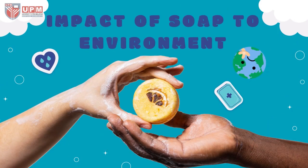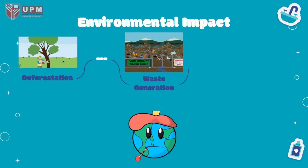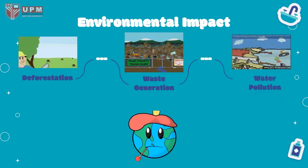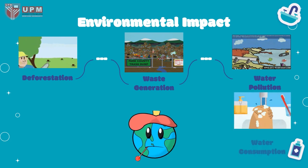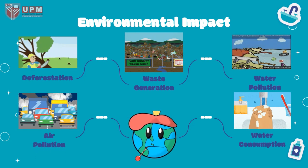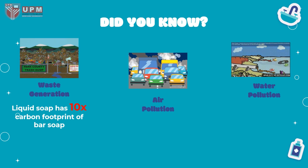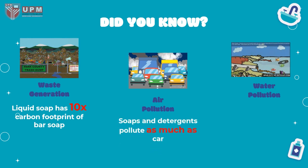Impact of soap on the environment. Raw material extraction to get oil such as palm oil will convert forest into agricultural area. Waste generation of plastic packaging and wrappers will end up in landfill. Residue in water, such as SLS, fragrance, and dyes, might cause low to moderate aquatic toxicity and also cause algae bloom. Estimated total mass of water consumed per kg of product is 1,200 kg and 5,200 kg of water for hand wash and dish soap respectively. Transportation of raw materials and final product using trucks will cause air pollution. Liquid soap has 10 times the carbon footprint of bar soap because of its manufacturing process and plastic packaging. Surprisingly, soaps and detergents in terms of air pollution pollute as much as cars, because of volatile organic compounds, or VOC, emissions from the products.